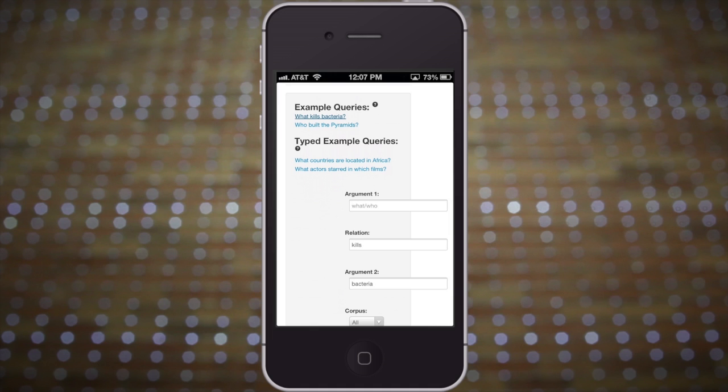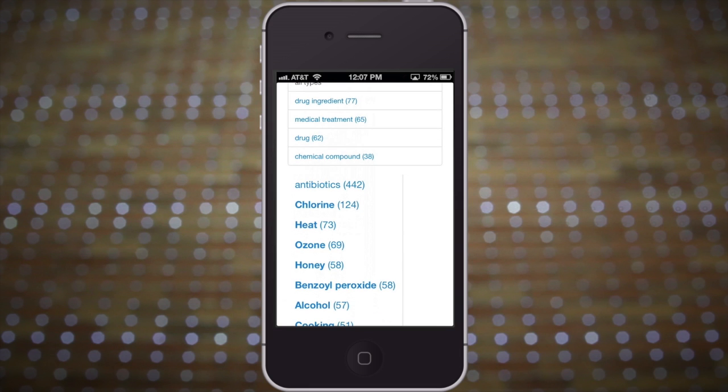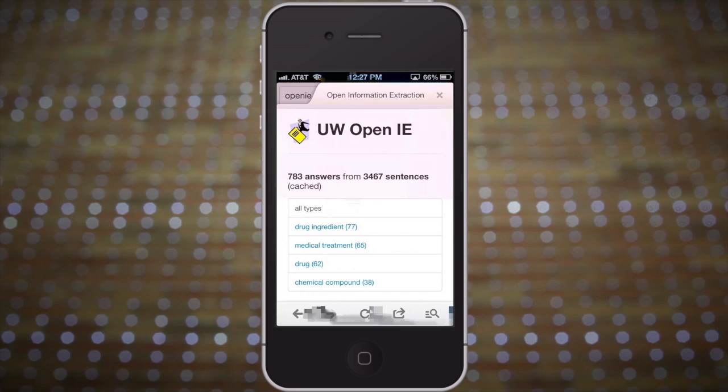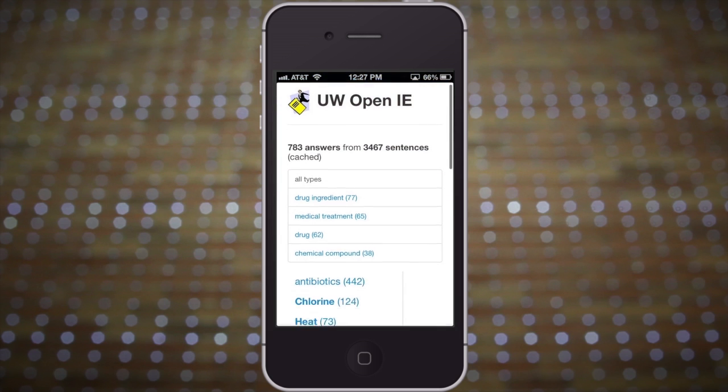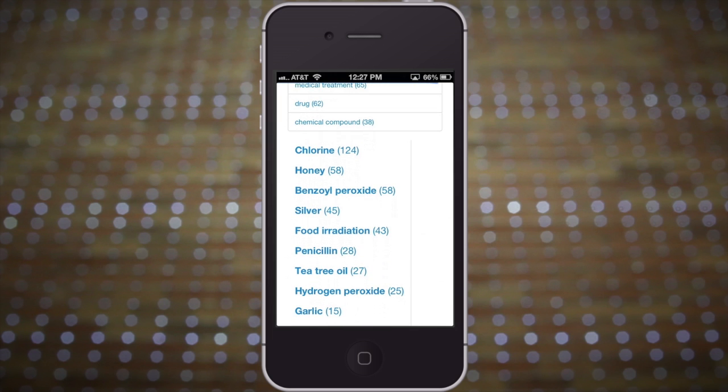For another example, with OpenIE, we can search for kills bacteria and quickly get a list of many different types of things that kill bacteria such as antibiotics or chlorine. We can also further divide these answers by their types. For example, we might be interested in just the drug ingredients that kill bacteria, tea tree oil and hydrogen peroxide.